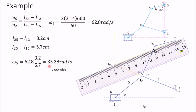The direction of rotation of ω₅ is clockwise. Because I₂₅ is the common instantaneous center for links 2 and 5, with I₁₂ on one side and I₁₅ on the other — they are at two opposite sides. Therefore, the directions of rotation of links 2 and 5 are opposite to each other. Since link 2 rotates anticlockwise, link 5 will rotate clockwise.